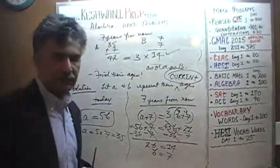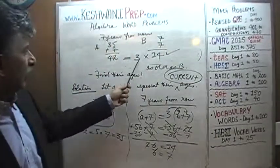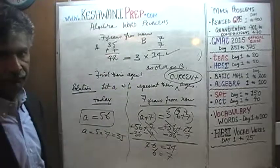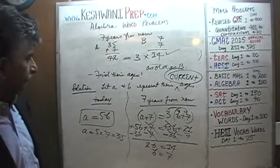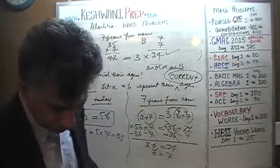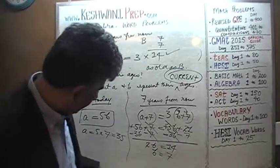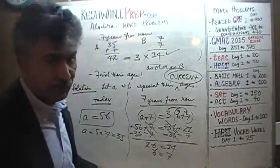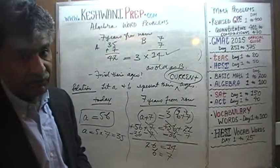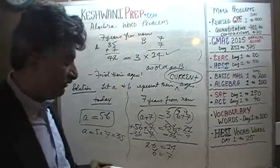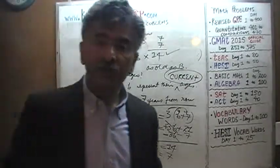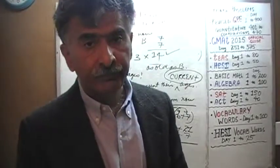Even though today A happens to be five times as old as B, in just seven years' time he will no longer be five times as old — he'll only be thrice as old. Bye now.